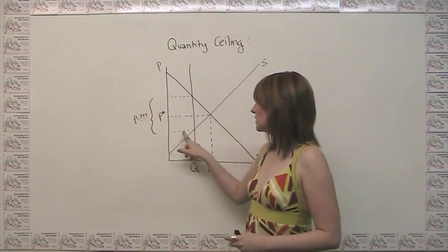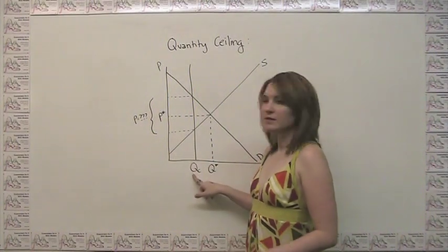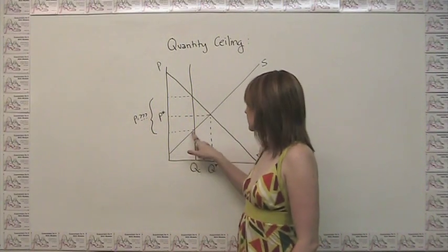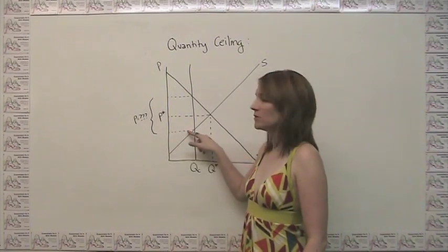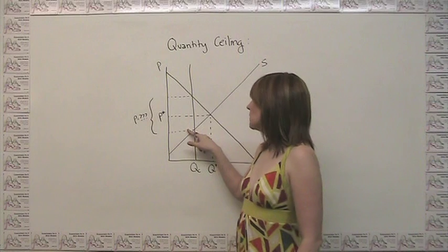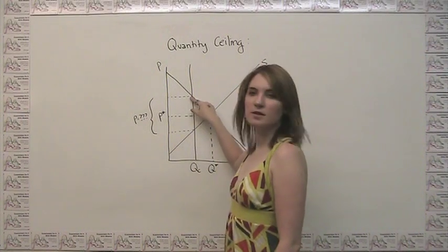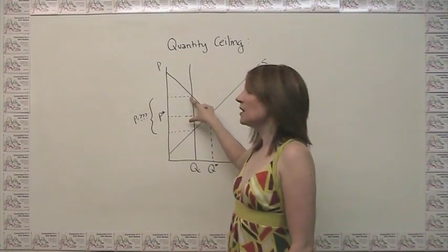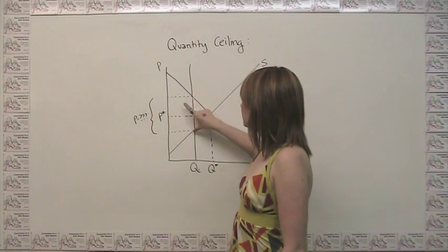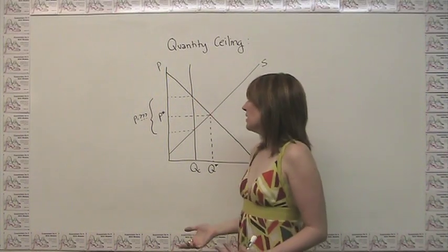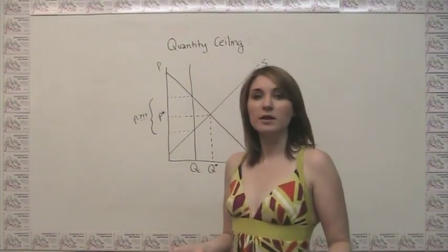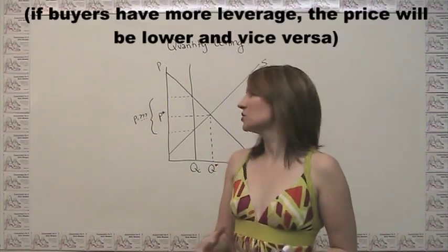Second, it gets a little bit difficult here because at this quantity ceiling, you'd say suppliers need to get a minimum of this price here in order to be willing to sell, but consumers are willing to pay a price all the way up here. So it's not well defined what price is going to exist between these two numbers. And it really depends on the relative bargaining power and things like that between consumers and producers.